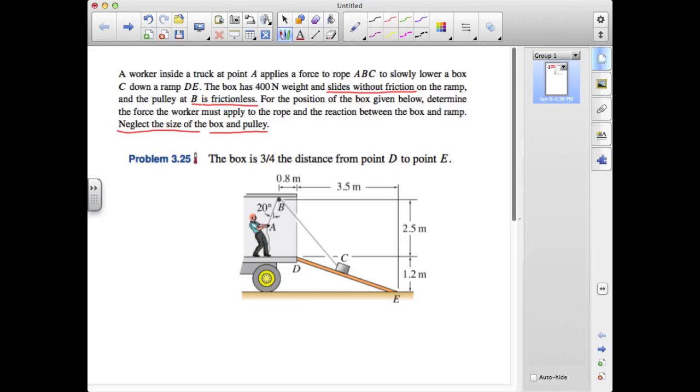We're also told that the pulley is frictionless, which means that whatever force is being exerted by the man, whatever tension he's putting the rope in at A, that will carry through all the way to C. So we have one continuous cable from A up and around the pulley here at B and down to C, and that will be all one cable and it will have a uniform tension in it.